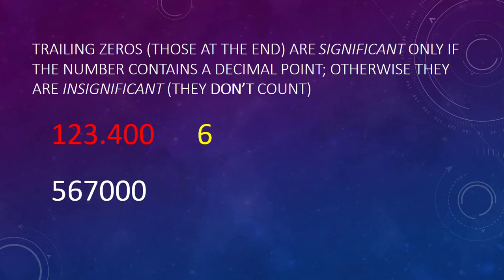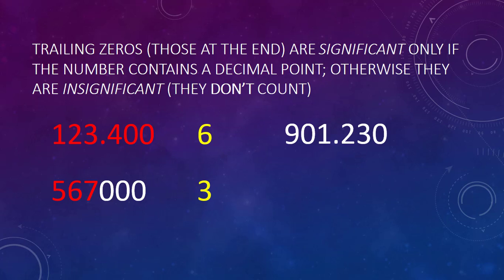Now what about this one? We have three trailing zeros, but there is no decimal point. So the only things that are significant in this number are the three non-zero numbers — so 567,000 is going to have three significant figures. Now what about this one? We have two zeros: one is in between two non-zero numbers so that is definitely significant, and then we have a trailing zero but we do have a decimal point, so that one is significant as well. Taking in our other four non-zero numbers, we have six significant figures.